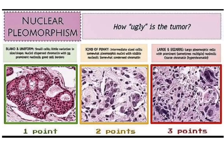Nuclear pleomorphism is categorized based upon nuclear morphology and nucleoli presence. One point is given for small uniform size nuclei with no nucleoli. Two points are given for large uniform size nuclei with prominent nucleoli, whereas three points are given for large and bizarre nuclei with very prominent nucleoli — sometimes multiple nucleoli are present.